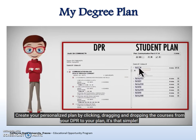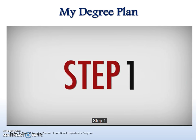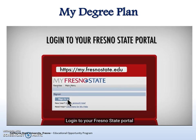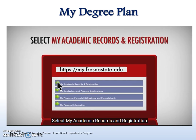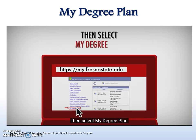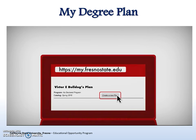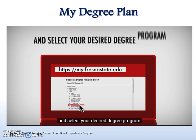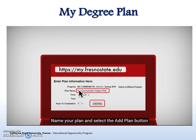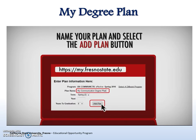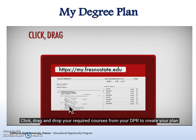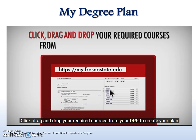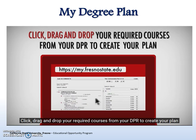To find My Degree Plan: Step 1, log into your Fresno State Portal and select My Academic Records and Registration, then select My Degree Plan. Step 2, click on the Create a New Plan button and select your desired degree program. Step 3, name your plan and select the Add Plan button. Step 4, click, drag, and drop your required courses from your DPR to create your plan.